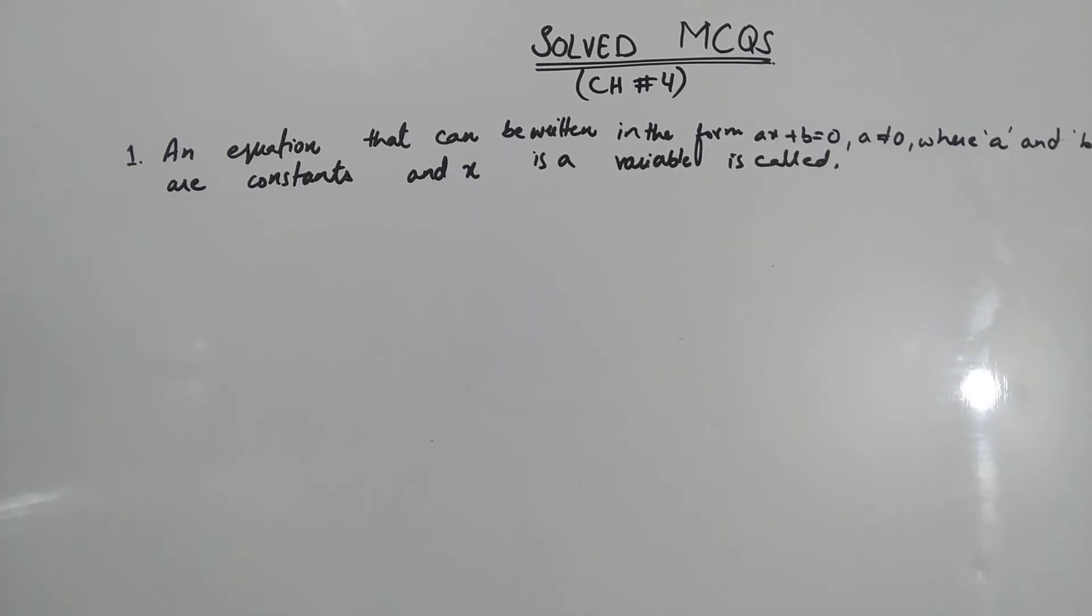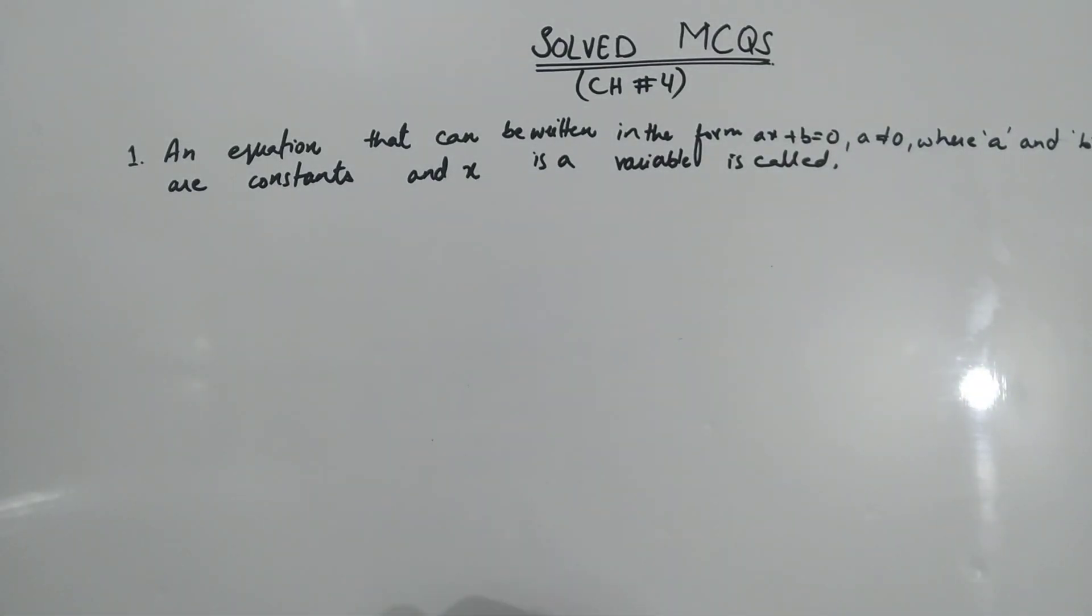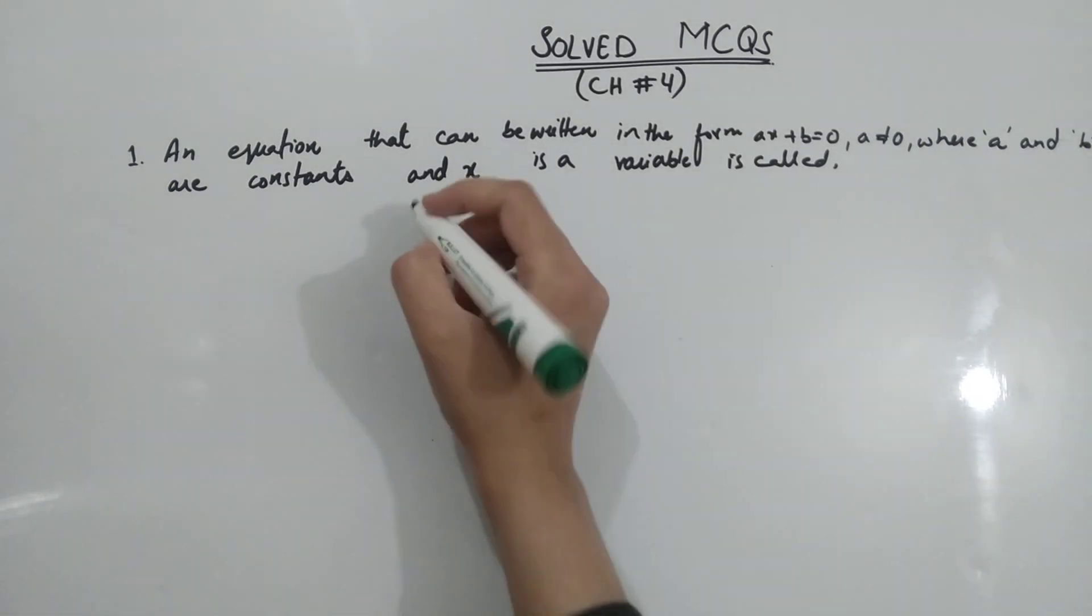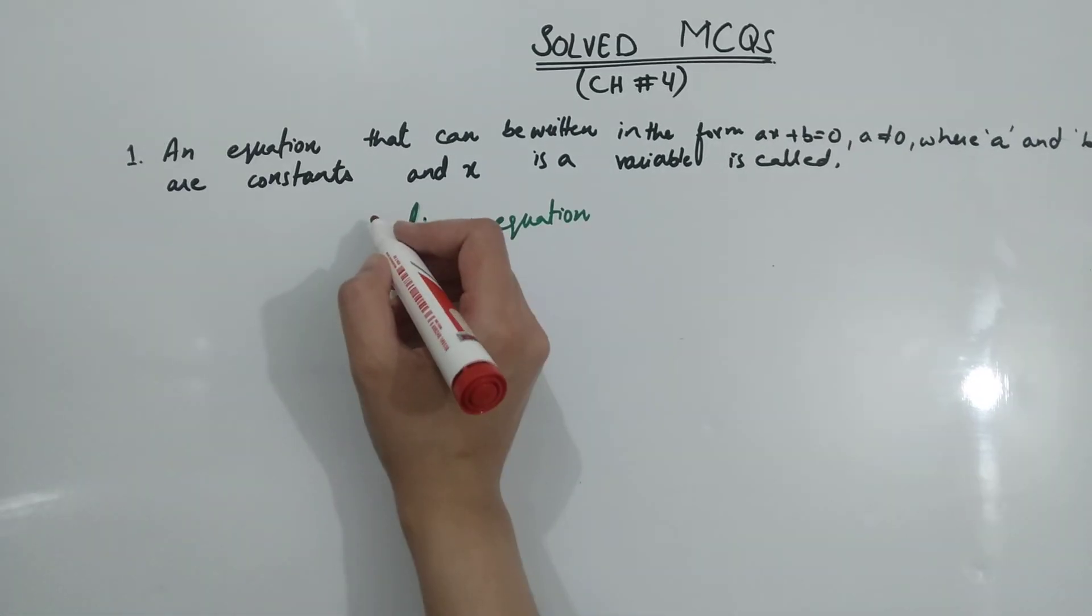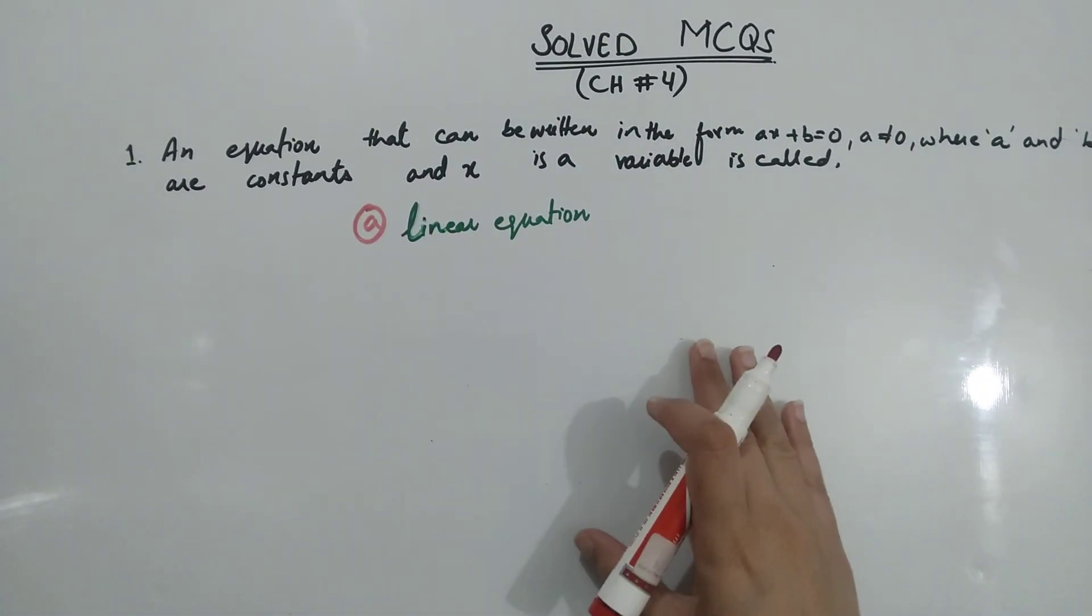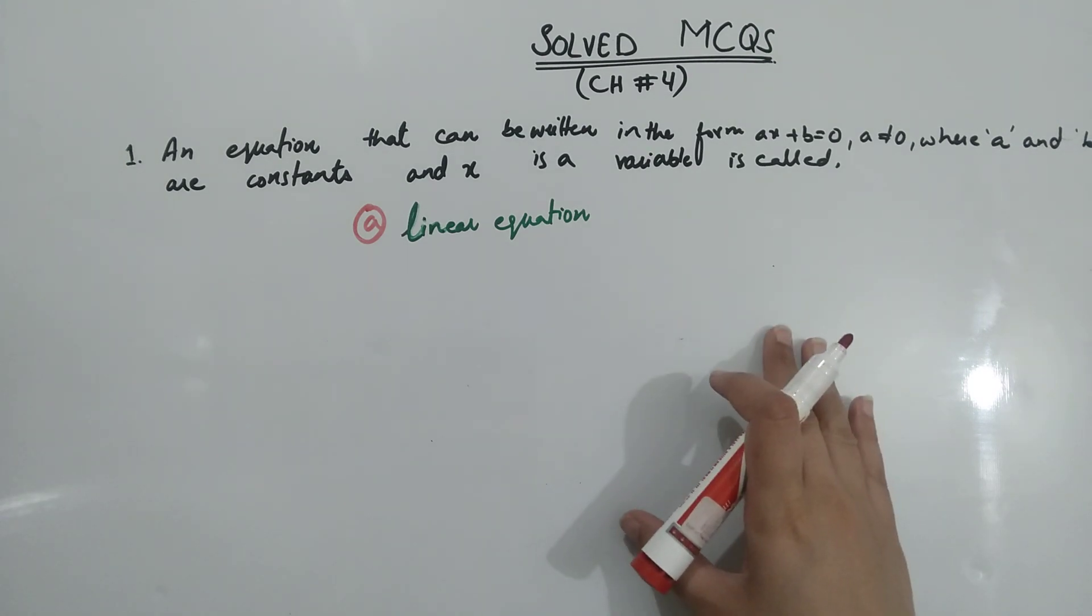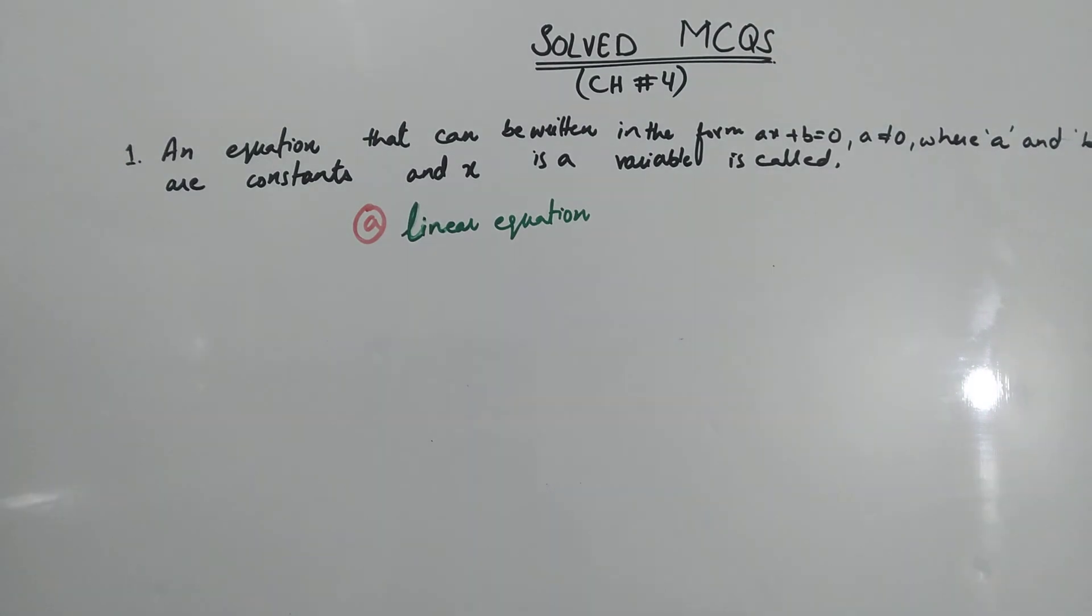Part 1: An equation that can be written in the form ax plus b equal to 0, where a is not equal to 0, and a and b are constants and x is a variable, is called linear equation. This is option a. This is actually the definition of linear equation, which is important.